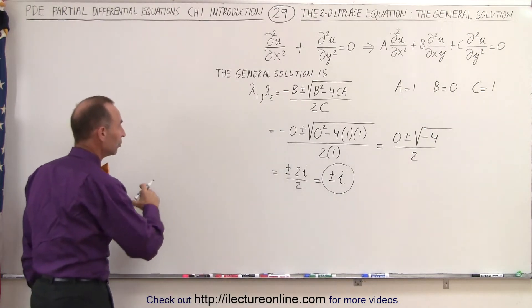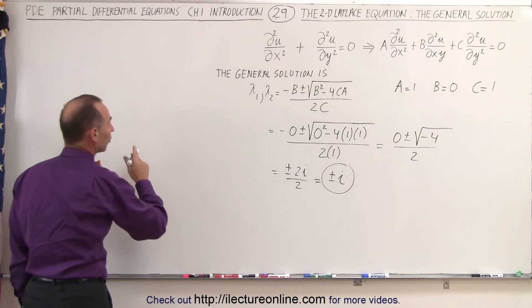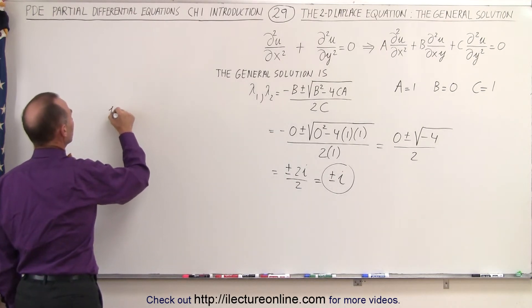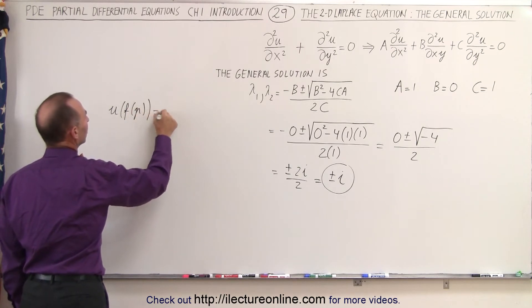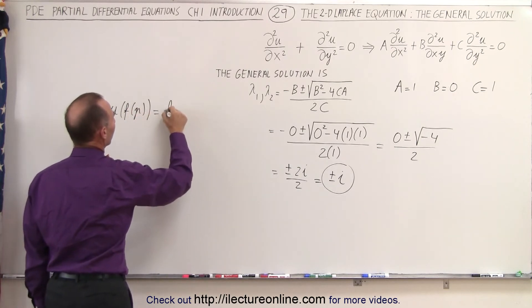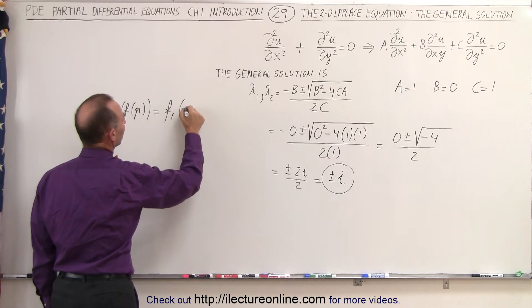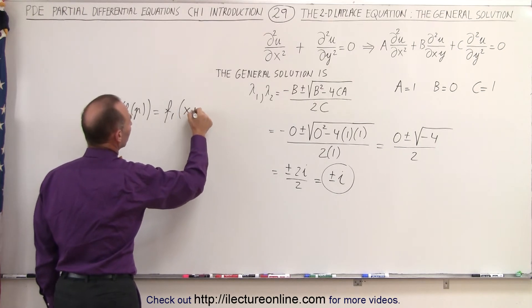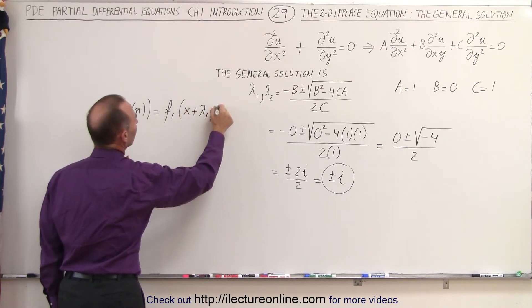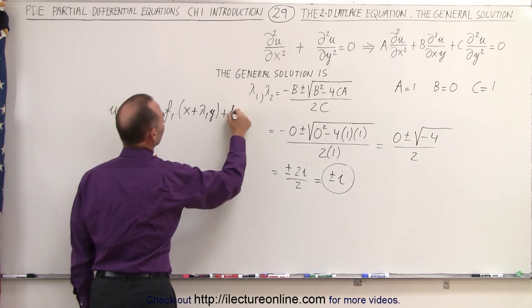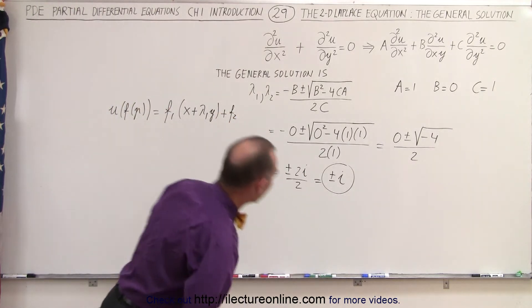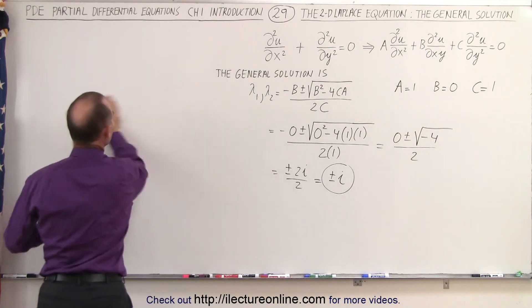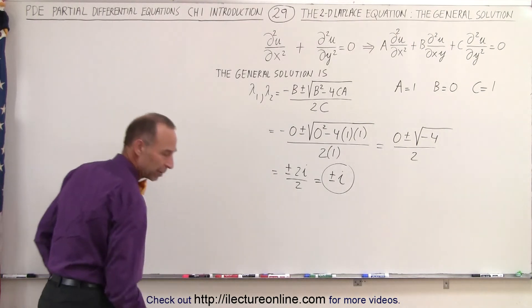Which then means we can write the general solution for the Laplace equation as follows. We have u, which is a function of p, which is equal to f1 of what we call x plus lambda 1 y, and then plus a second function. Let me clean it up a little bit because otherwise it'll get too messy.